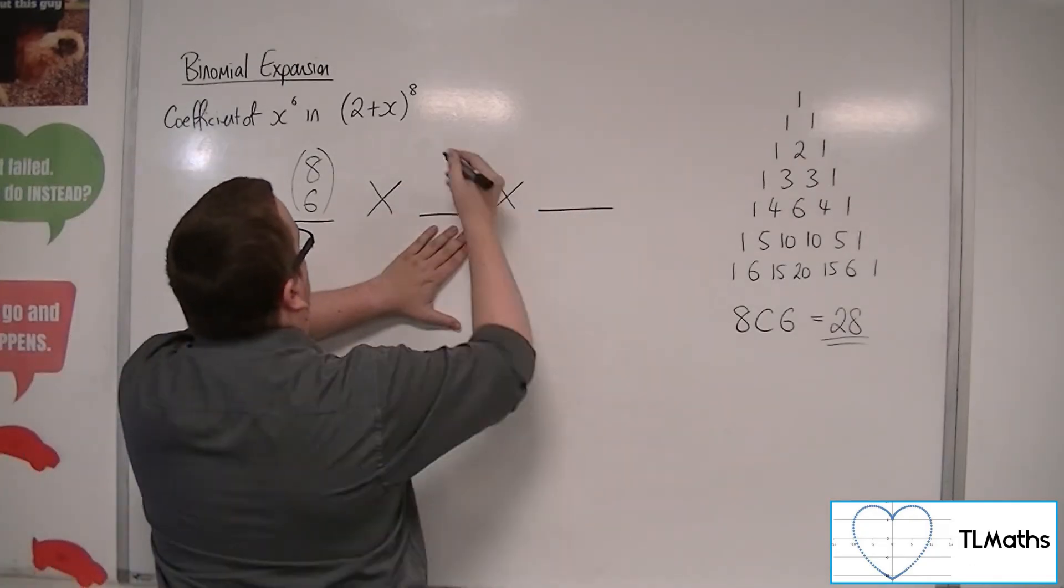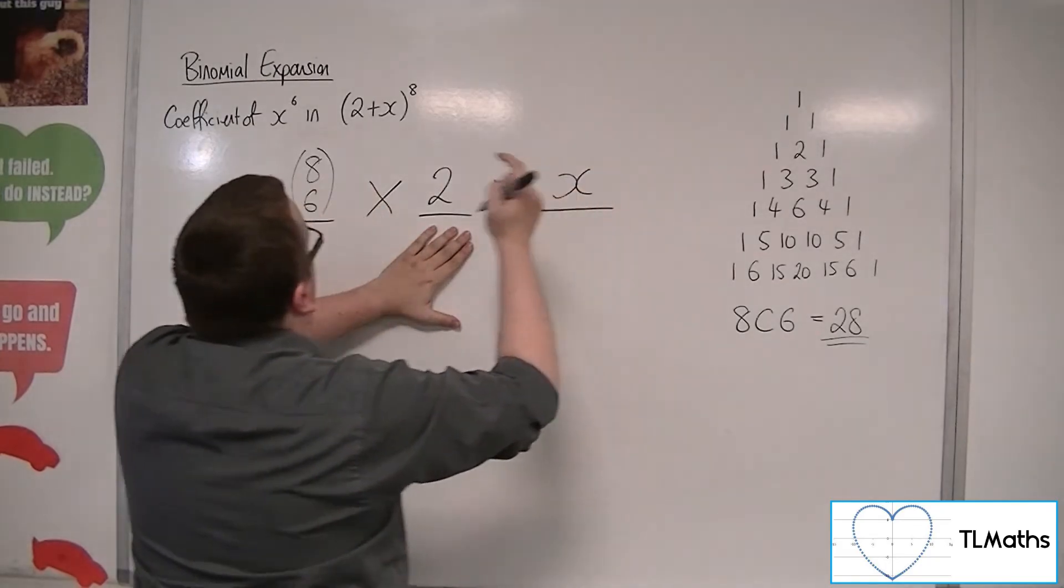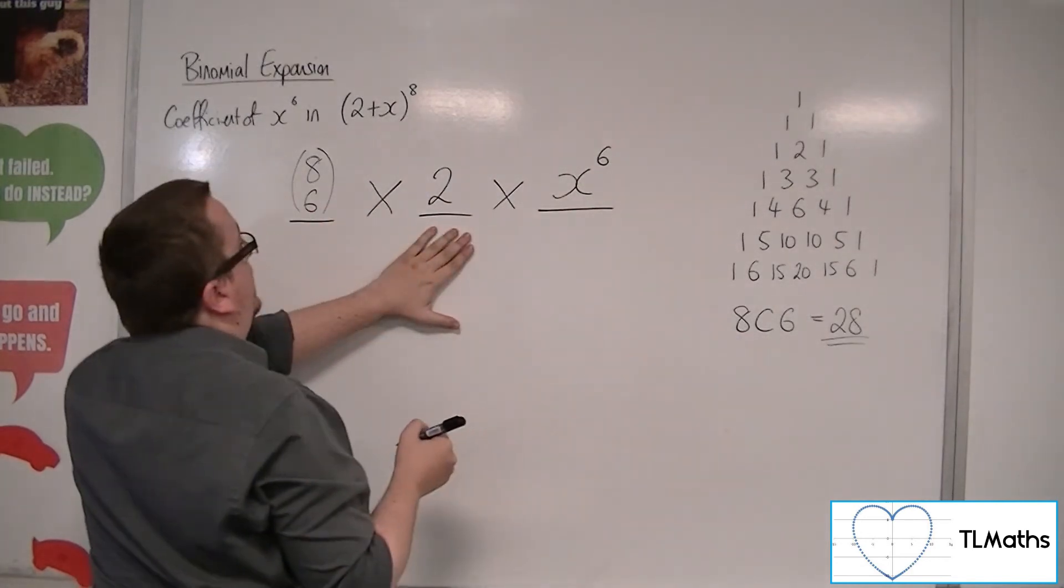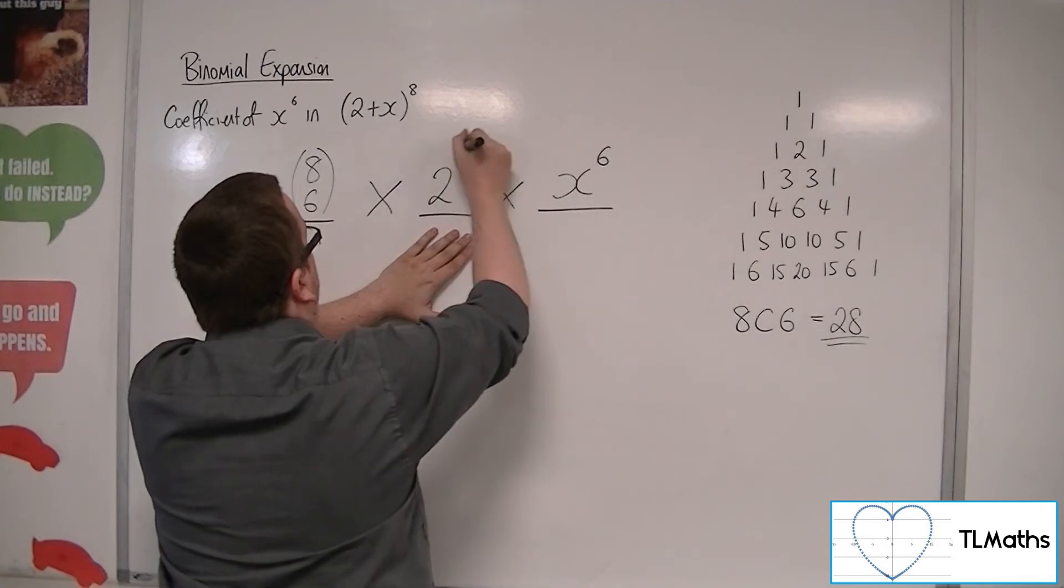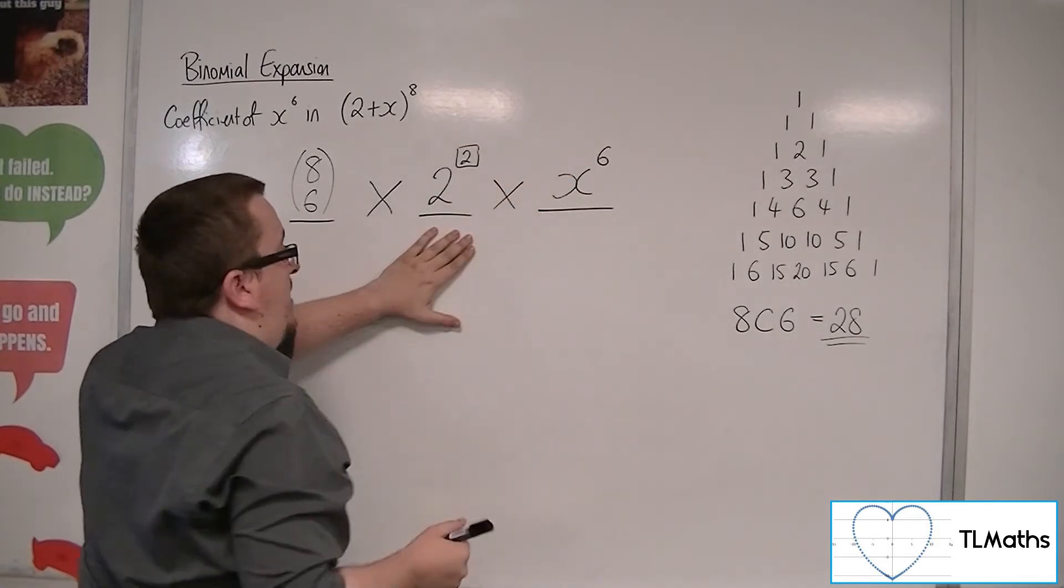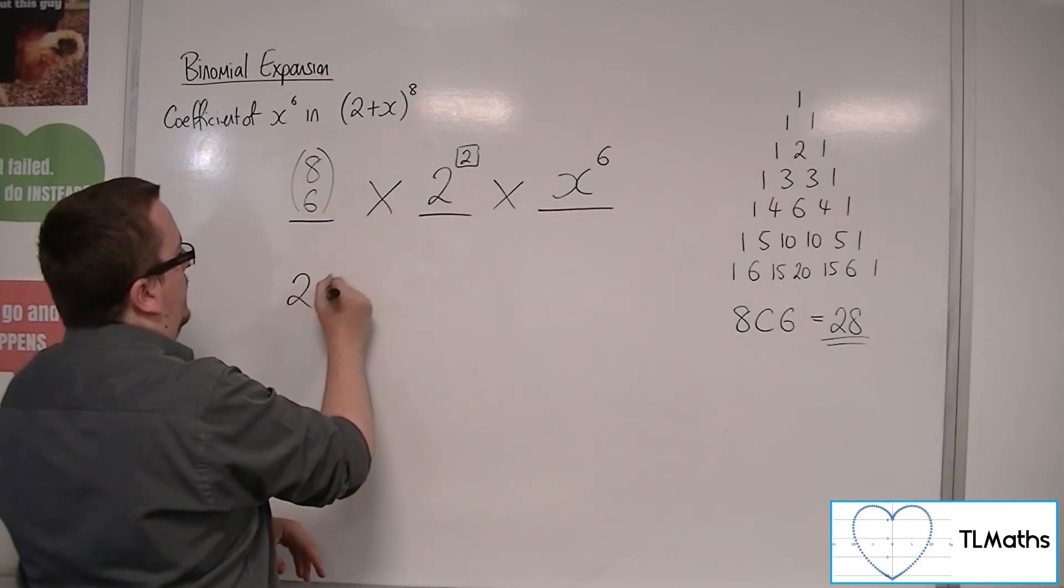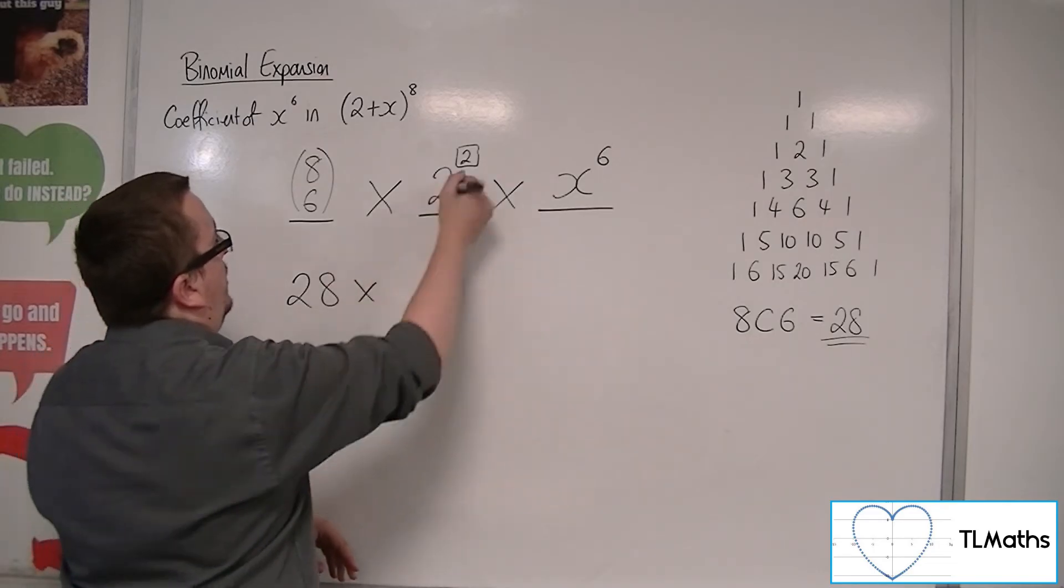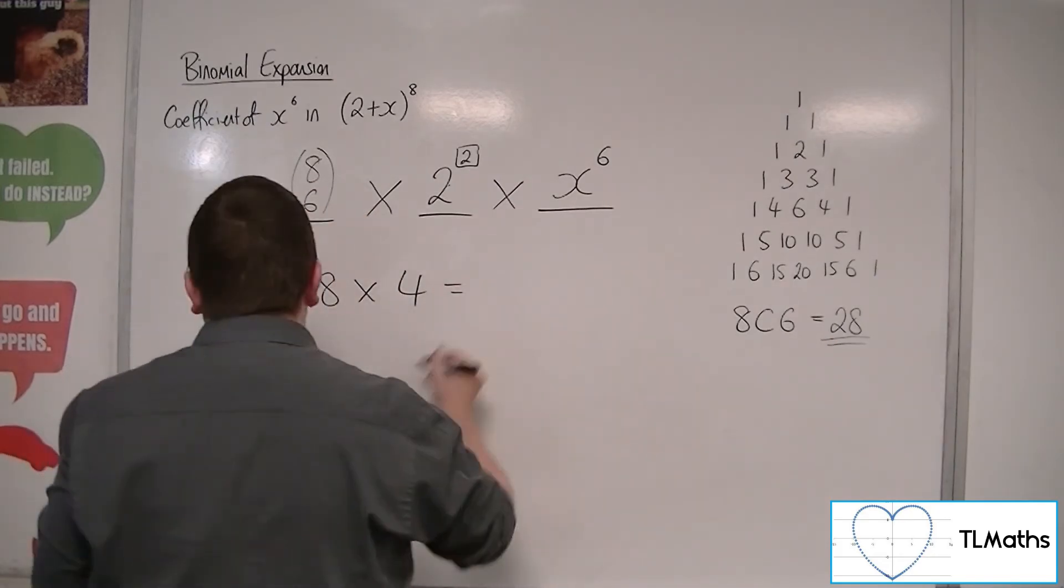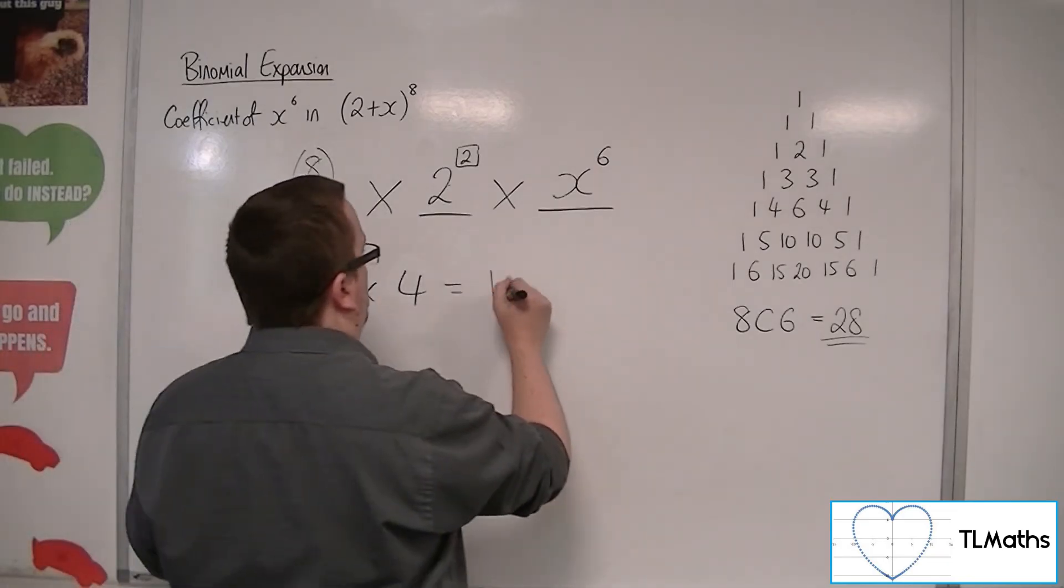Then, in this column I've got the 2, and in this column I've got the x. Now, I need x to the 6, so this has to be x to the 6, and these two numbers here, because this is 2 to the something, these two numbers have to add up to 8, so that's got to be 2. So now I've got 28 as my coefficient, times 2 to the 2, so 4. There's nothing else coming from the x to the 6, so I don't care about that. So the coefficient is 28 times 4, which is 112.